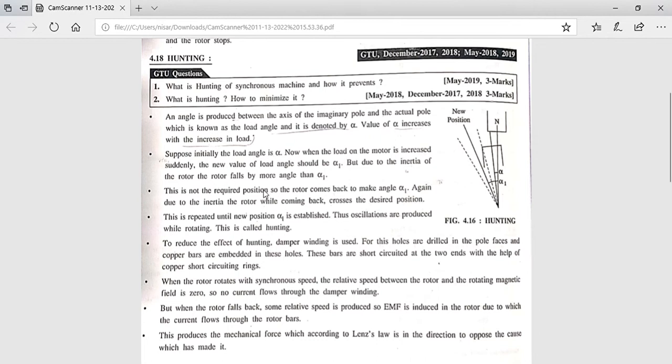The rotor will try to make the angle alpha 1. This is not the required position, so the rotor comes back to make the angle alpha 1. Again, due to the inertia of the rotor coming back, it falls back.